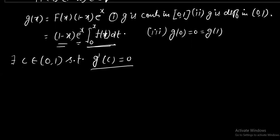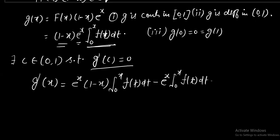To check g'(c), first we should calculate g'(x) which is equals to eˣ(1-x), product rule I am applying, ∫₀ˣf(t)dt. Next, -eˣ∫₀ˣf(t)dt plus eˣ(1-x)f(x). This is what we have. I am naming this equation as star. I am naming this equation as smiley.